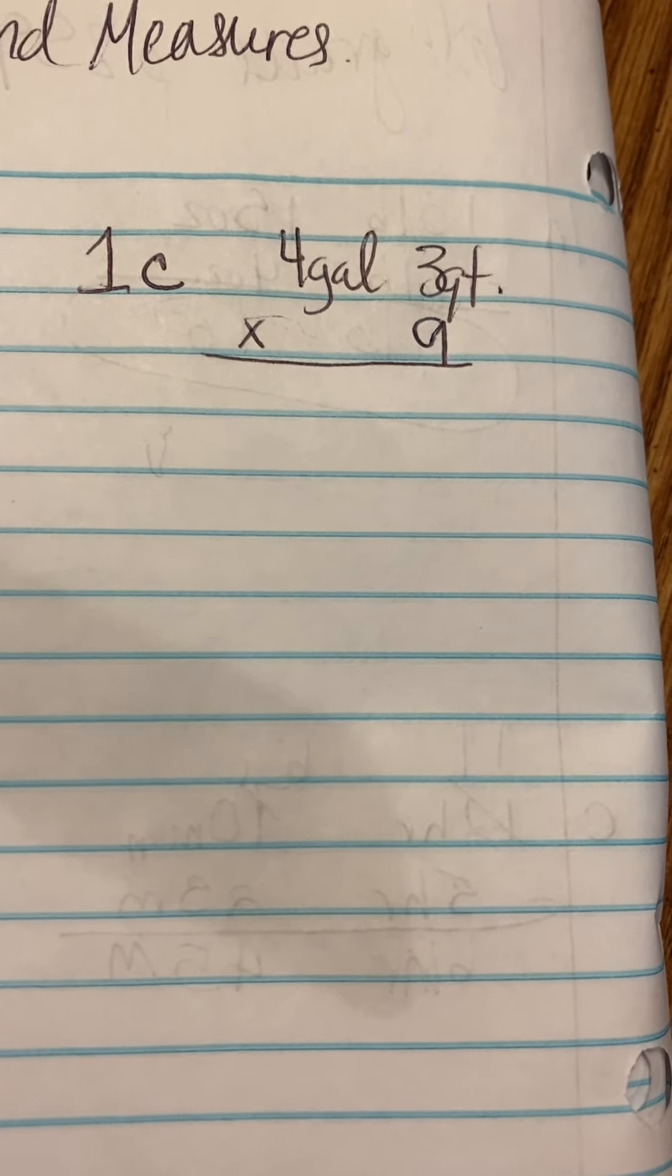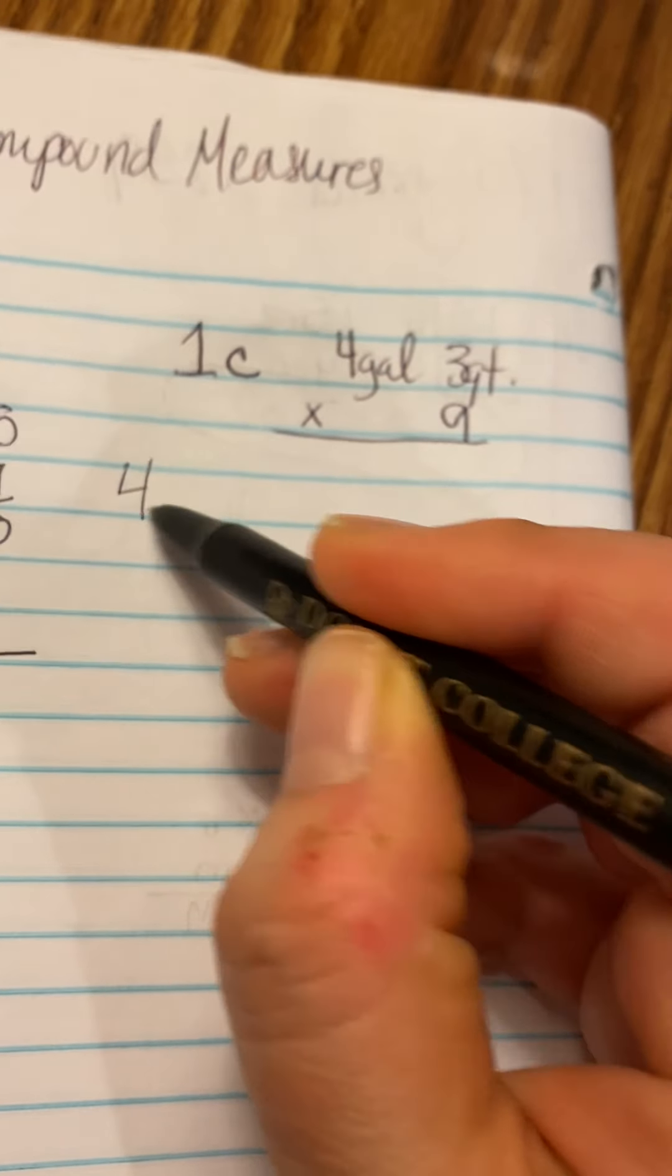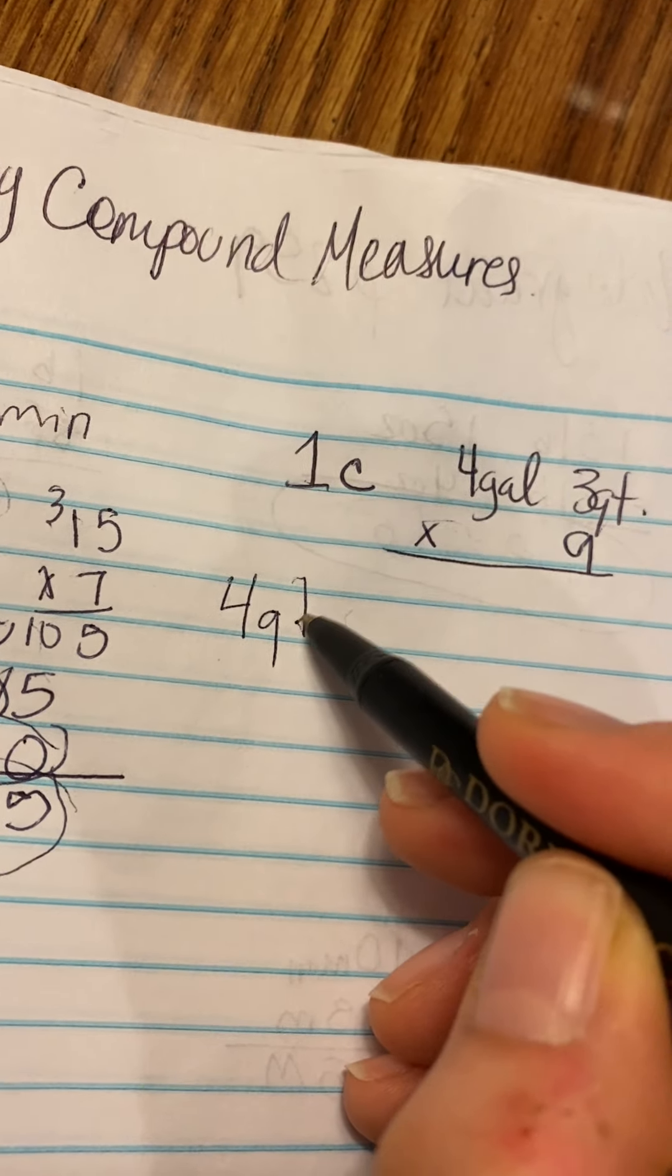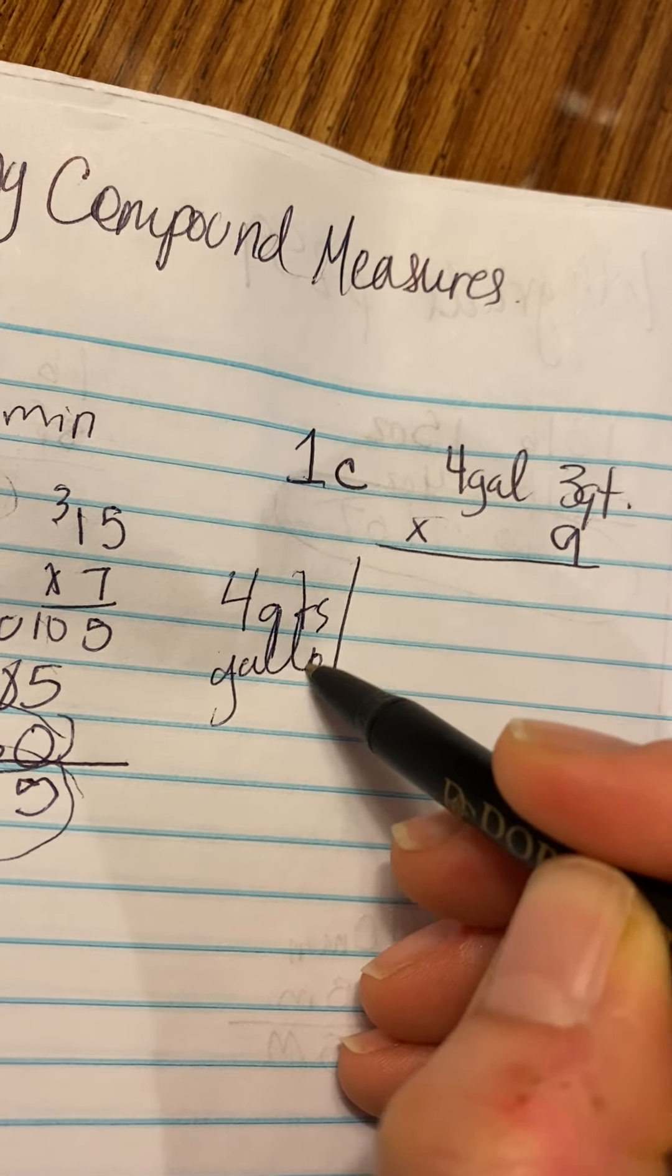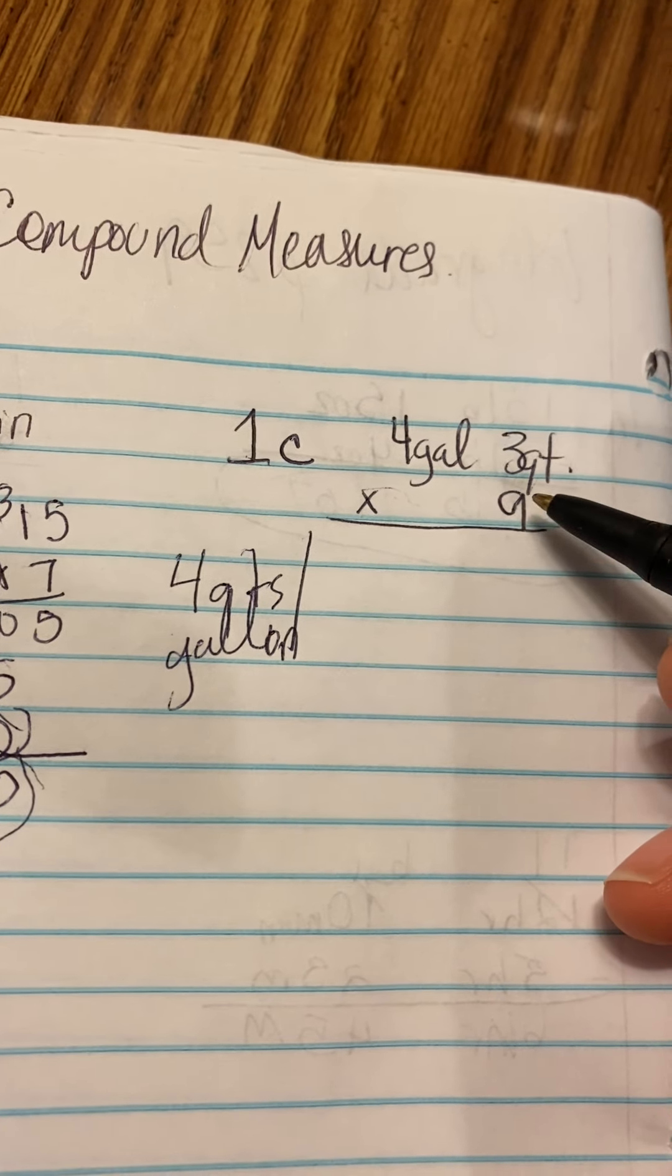Let's take a look at one more. This is actually 1C in your book. So we have 4 gallons and 3 quarts times 9. Well, you have to know that there's 4 quarts per gallon. So let's now do the math on here.